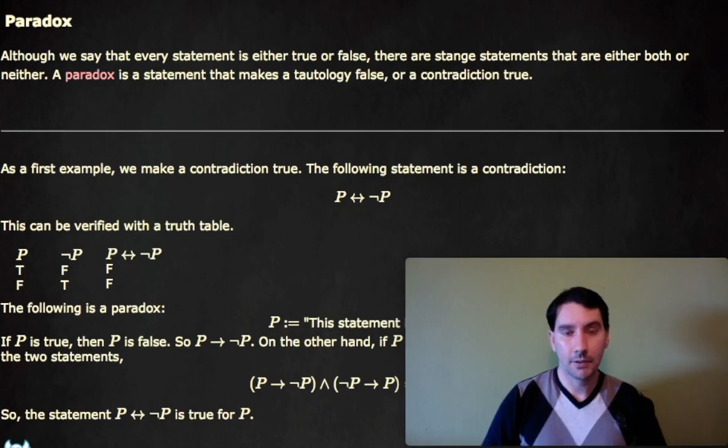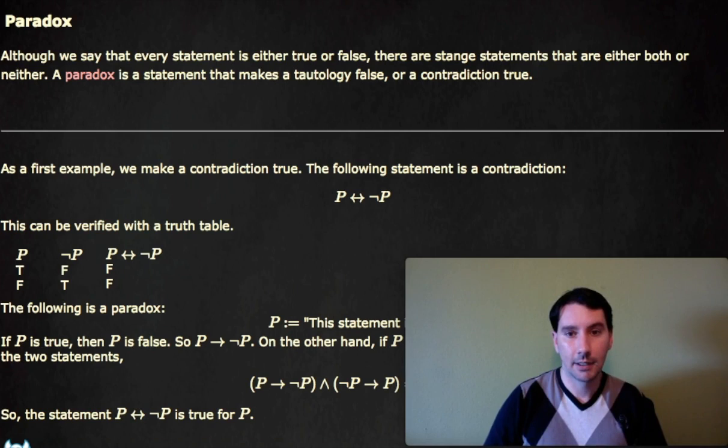In all our talk about logic, we discuss statements which are either true or false. But not all statements are either true or false. There are always these statements that are either both or neither, and we call these statements paradoxes. A paradox is something that makes a tautology false or a contradiction true, even though that breaks the definition of tautology or contradiction. It's a constructed English sentence, not a logical statement.